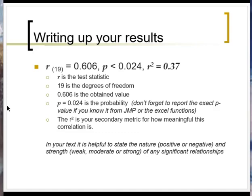How would you write up these results? We have some shorthand for this test. Denote the Pearson's correlation with R, put degrees of freedom in brackets, list the calculated test statistic, list the p-value, and then list the R² value. In your actual text it's also helpful to state whether you have a positive or negative correlation and whether it's weak, moderate, or strong. This only has to be done for significant relationships — if you don't have a significant correlation, you're done.